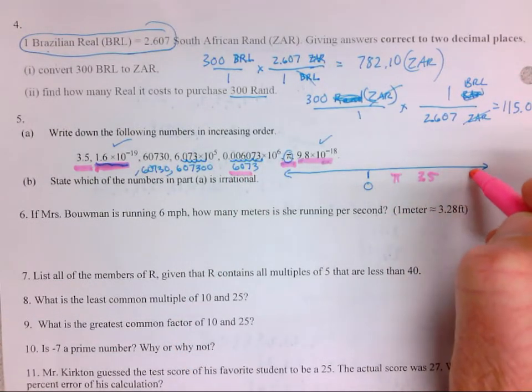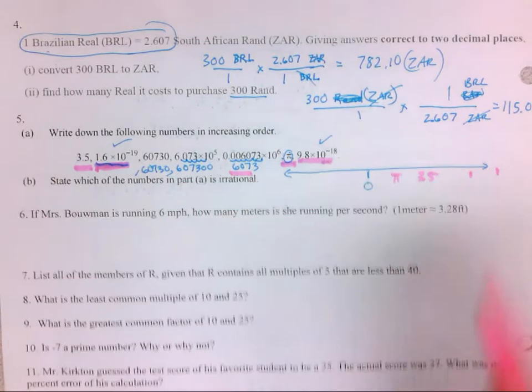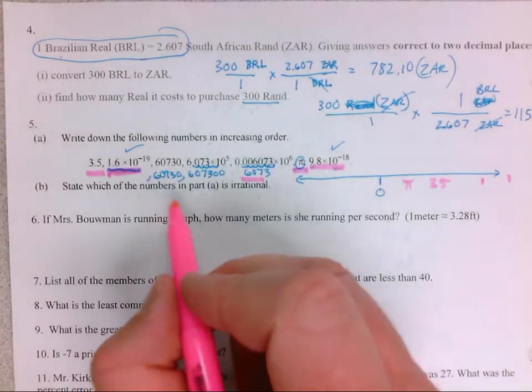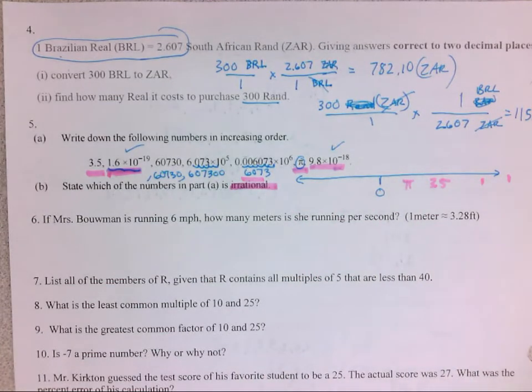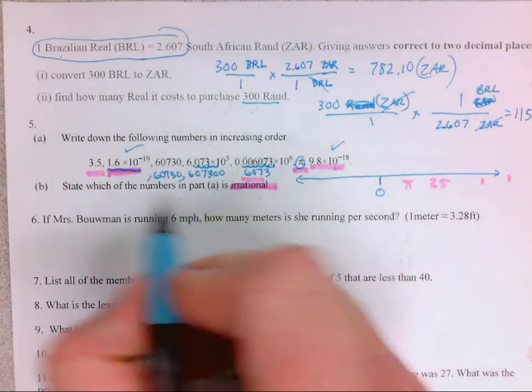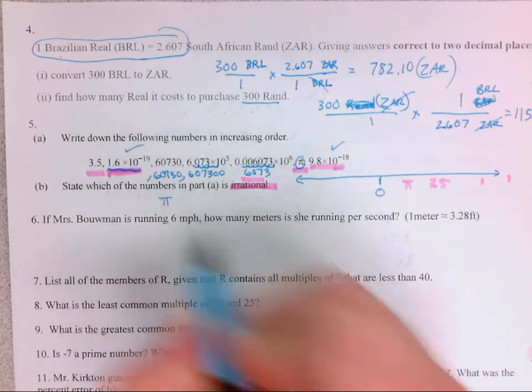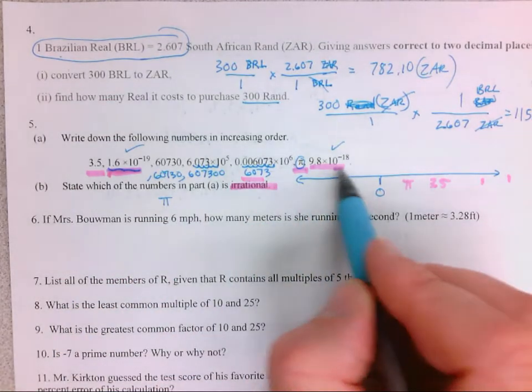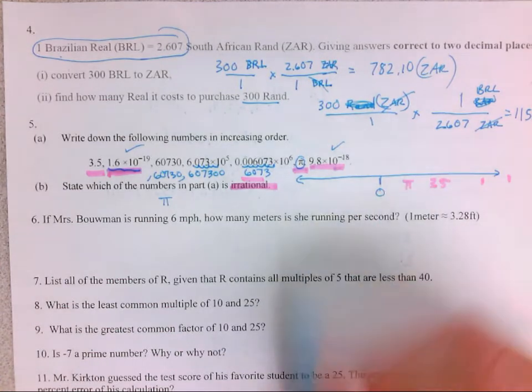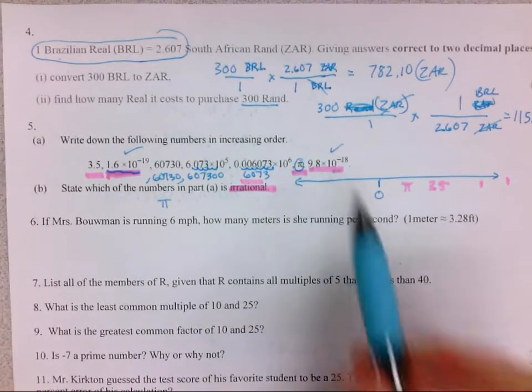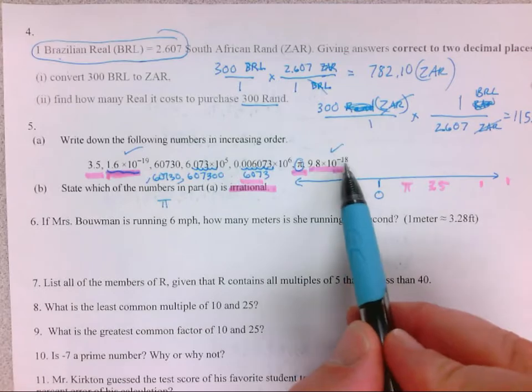So pi is a little smaller than the 3.5, so pi would be next. Now I've got my 6,000 and I got 60,000 and 600. State which of the numbers in part A is irrational. Irrational cannot write as a fraction of integers. That's all you need for explanation. Pi cannot write as a fraction of integers. Any other one of these, if you ride them out the long way, you could write them as an integer. Don't say these are irrational because they're written in scientific notation.